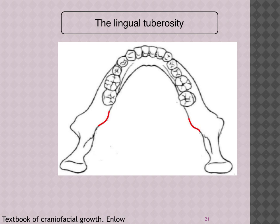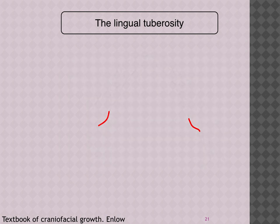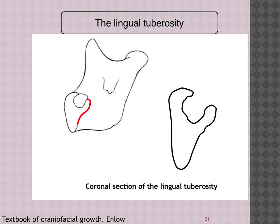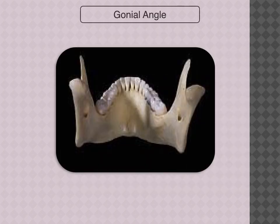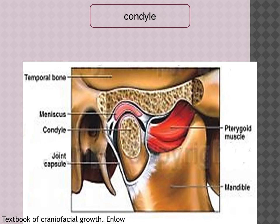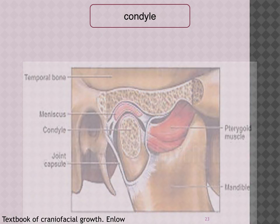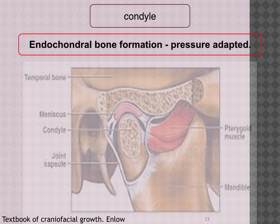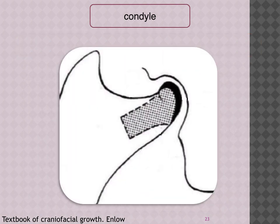The lingual tuberosity on the lingual aspect of the mandible also grows posteriorly, with deposition on top and resorption below making it prominent with time. The gonial angle widens with age. The condyle is very interesting: the temporal bone condyle with a meniscus in between — the entire condyle structure grows downward and forward, dragging the mandible down and forward. The condylar cartilage persists lifelong as it is a pressure-adapted region undergoing endochondral bone formation.